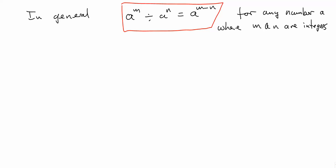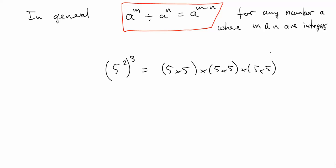One more rule. If we took 5 squared and raised that to the power of 3 — 5 squared cubed — 5 squared is 5 times 5, and cubed means we multiply 3 of those together. So that would be 5 times 5, multiplied 3 times. We have altogether 6 fives multiplied together, which is 5 to the power of 6. We've got 3 lots of 2 fives, so it's 2 times 3: 5 squared cubed is 5 to the 2 times 3, which gives 5 to the power of 6.